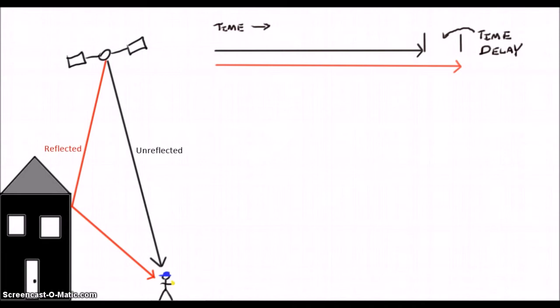Fortunately, modern receivers use processing tricks to determine which of the signals arrived first and is the genuine signal. Unfortunately, you can only do so much, as a slight delay could also be attributed to other sources of error, such as the aforementioned ionospheric interference.